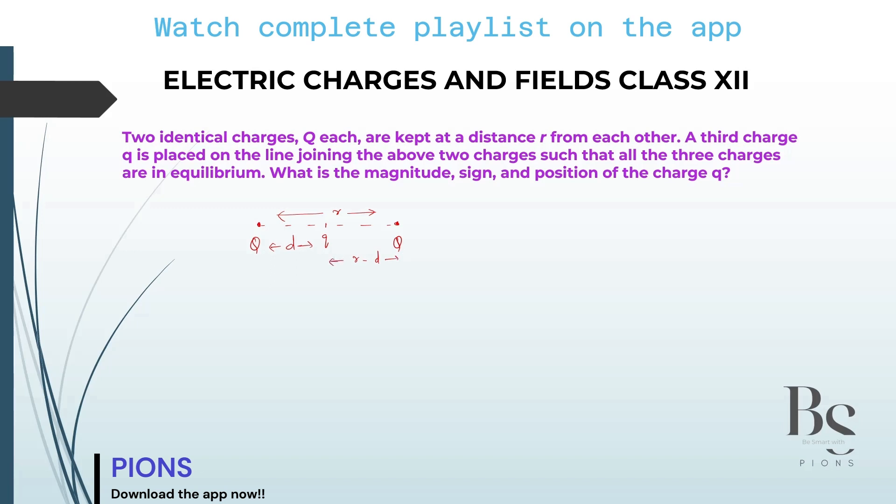Let's first find the force between the two capital Q charges. Let me call it as F1. 1 by 4π epsilon naught, first charge Q, second charge Q, separation between them R square. This was the force when there was no small q. And this force is not getting affected when small q is introduced, which means it is overcoming this force.